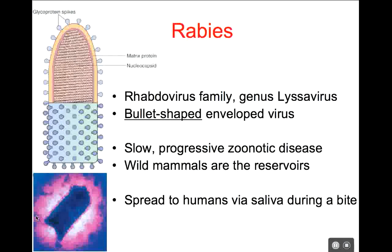Alright, the last part of this lecture is on rabies. We're going to do a quick overview of several RNA viruses. We talked in depth about influenza and HIV, but we'll do a quick overview of some of these other ones. Rabies is first.